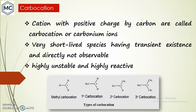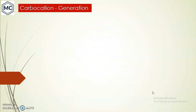These are the types of Carbocation: the first is the Methyl Carbocation, then Primary, Secondary, and Tertiary Carbocation. In a Primary Carbocation, the cationic carbon is attached to one carbon group. In Secondary, it is attached to two carbon groups. In Tertiary, it is attached to three carbon groups.